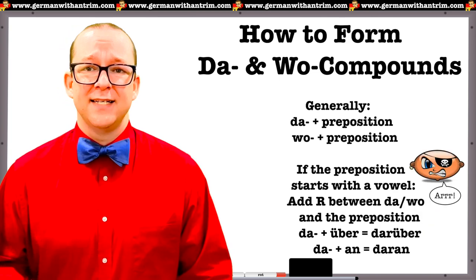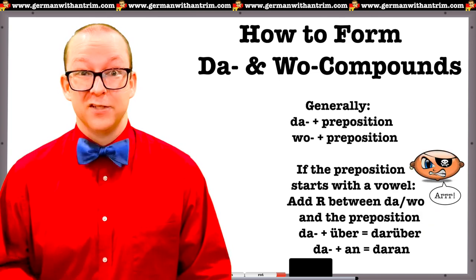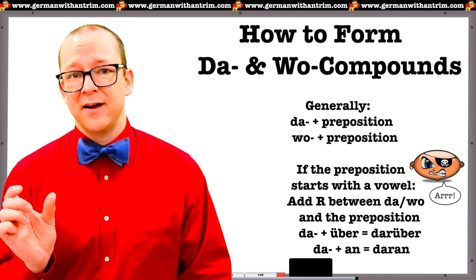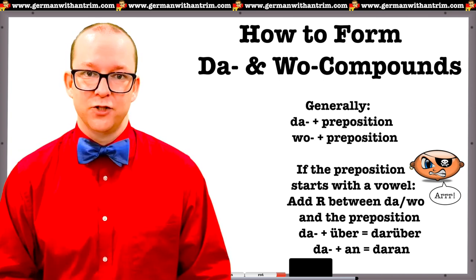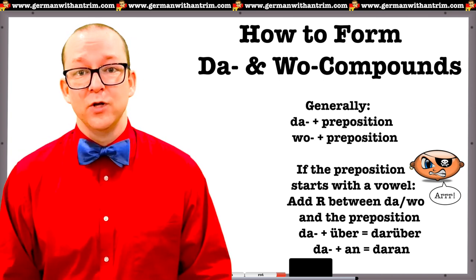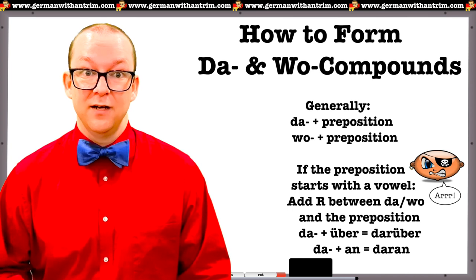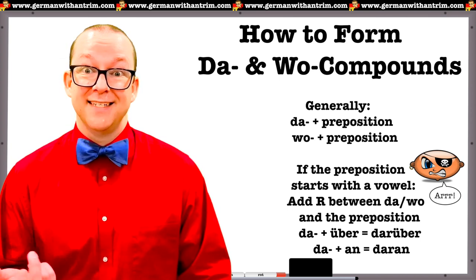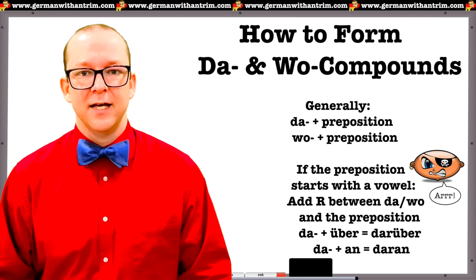When you combine da or wo with a preposition that starts with a vowel, such as über or an, you need to add an R between the prefix and the preposition. For example, über becomes darüber and worüber, while an becomes daran and woran.